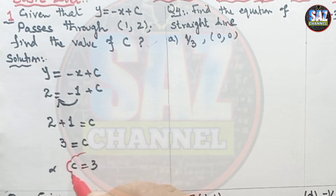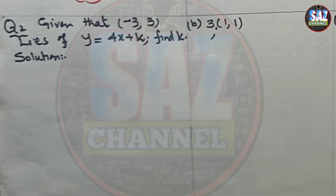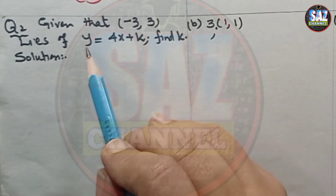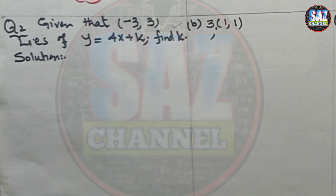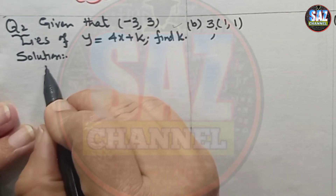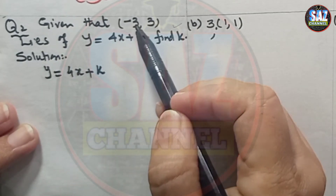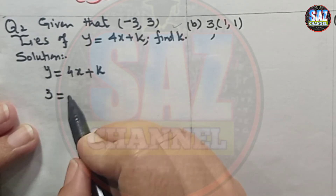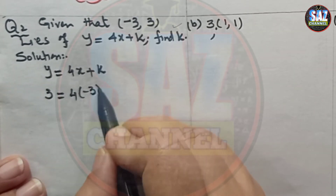Moving to question two: the point (-3, 3) lies on the line y = 4x + k. Find the value of k. Again, a very easy question. The given line is y = 4x + k, where x = -3 and y = 3. Replacing y with 3 and x with -3: 3 = 4(-3) + k.